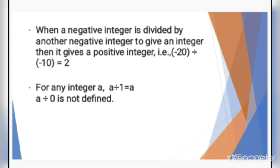For any integer a, a divided by 1 equals a. That means if we divide any integer by 1, we get that integer as the answer. Also, a divided by 0 is not defined. I hope you all have understood the properties of integers.